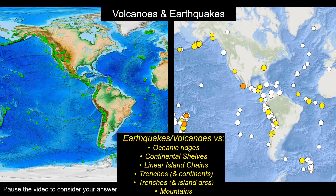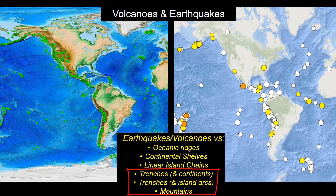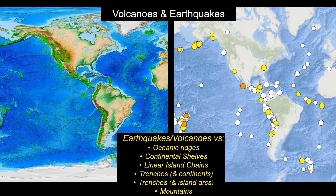Both earthquakes and volcanoes are adjacent to trenches, found near continental margins and island arcs, and they appear to be common in association with mountain ranges. In contrast, oceanic ridges are outlined by a modest number of earthquakes, especially in the Atlantic Ocean, but not too many volcanoes. If we look at the wider continental shelves, these locations are much quieter — hence, they're often referred to as passive margins.